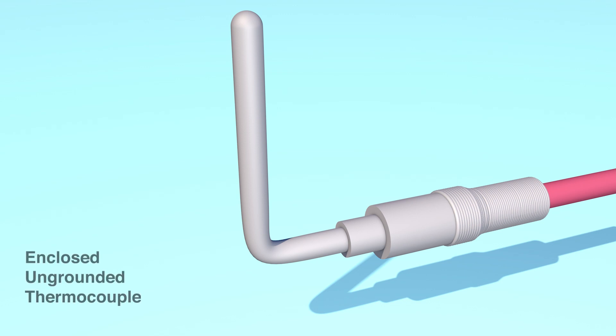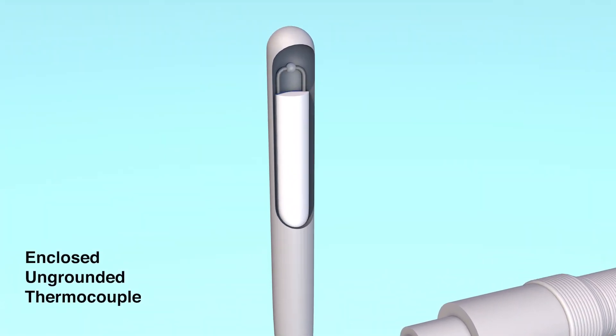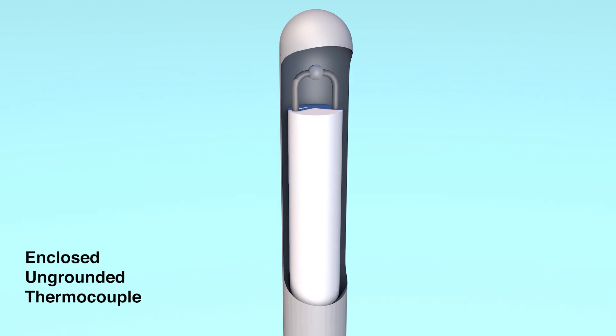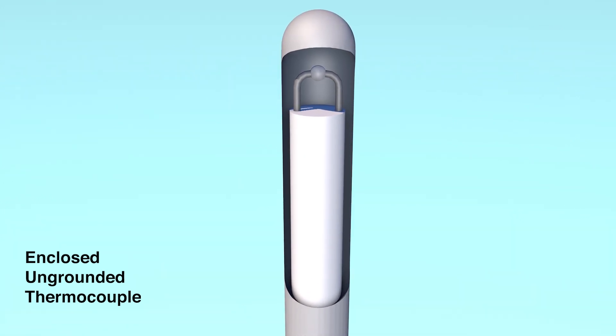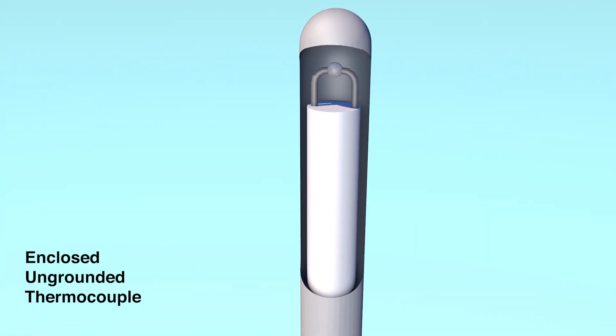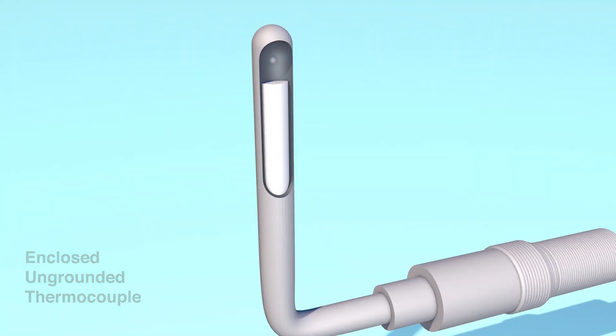The junction of an enclosed ungrounded thermocouple is detached from the protective sheath, providing immunity from ground loop problems. The disadvantage is that the response time will be slower than the grounded junction type.